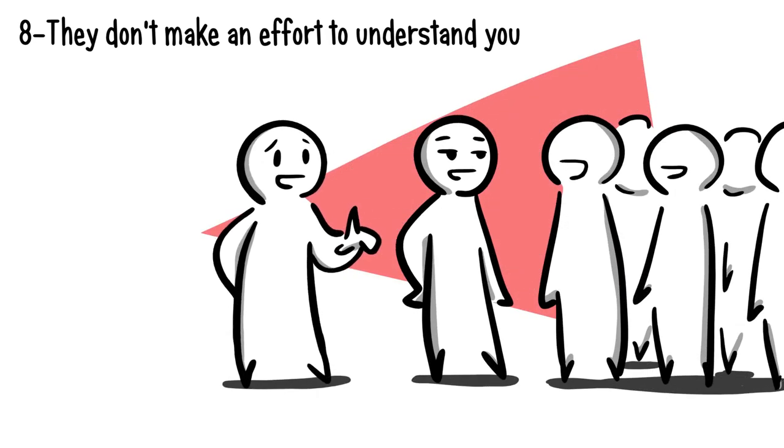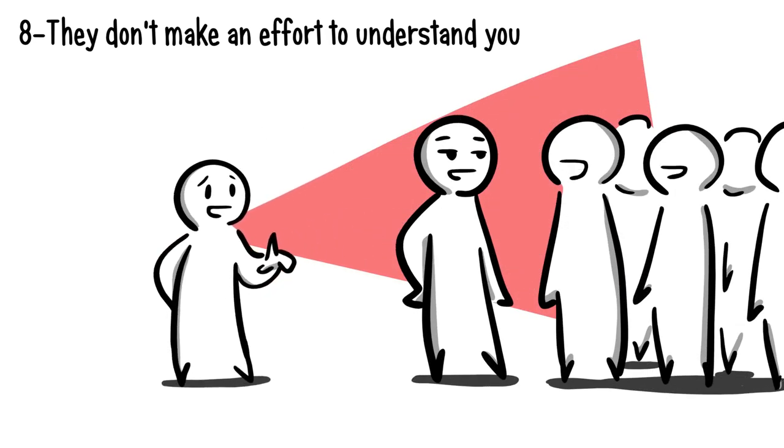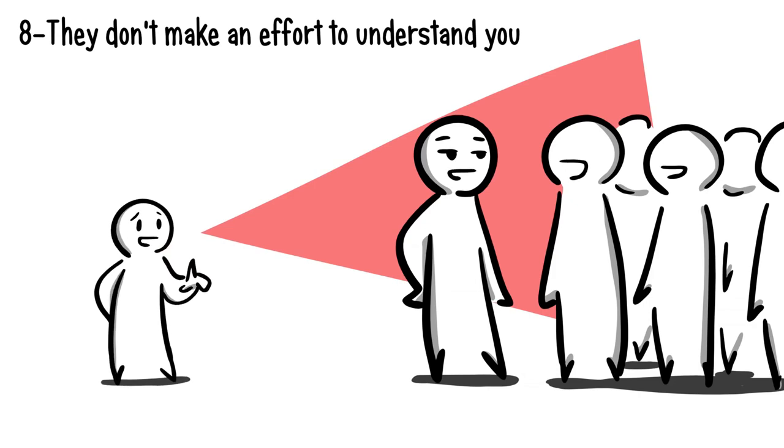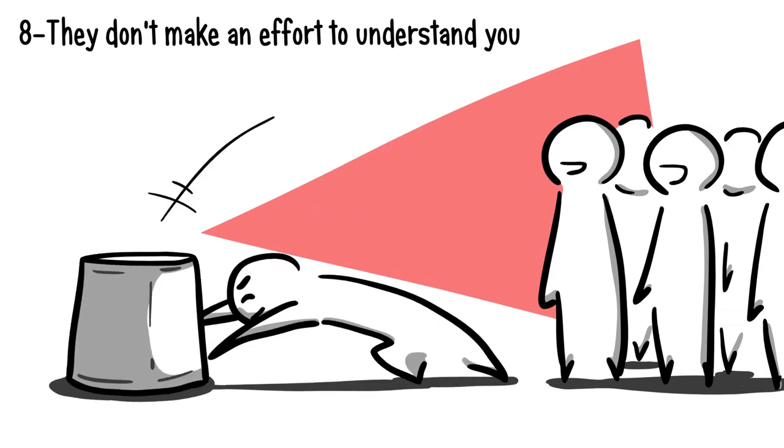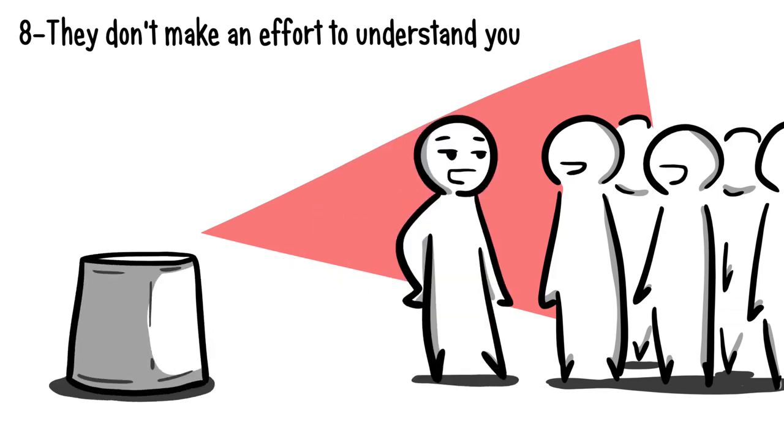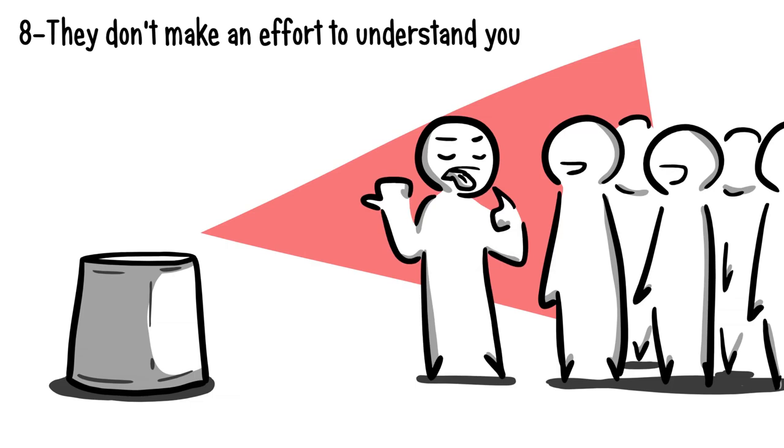Number 8. They don't make an effort to understand you. Feeling misunderstood can be a rather alienating experience. So when someone dislikes you, they won't want to provide support to your ideas and values. Instead, they'll make you feel invisible, unheard, and will dismiss your thoughts, whether it's done subtly or explicitly. One-upping is another strategy they use to control the conversation instead of allowing you to give your own inputs.